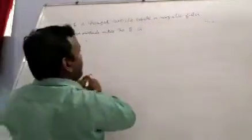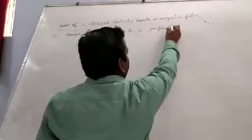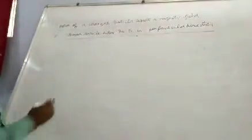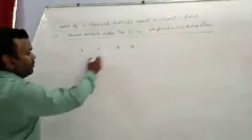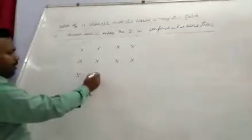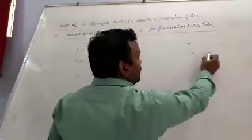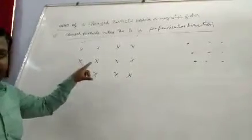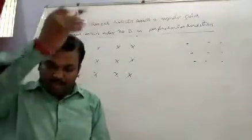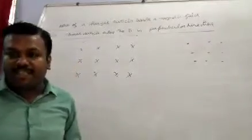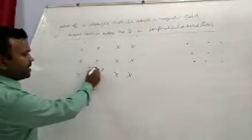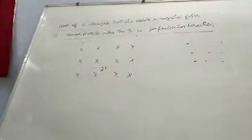Second condition: whenever a charged particle enters the magnetic field in perpendicular direction. In perpendicular direction, the magnetic field is like this - cross magnetic field. Cross means either dot or cross, representing perpendicular to the plane of paper, either downward or upward direction.